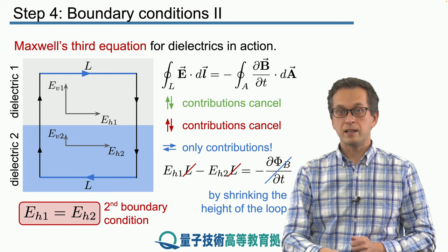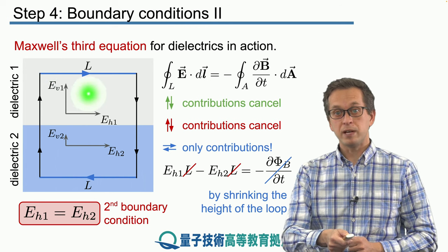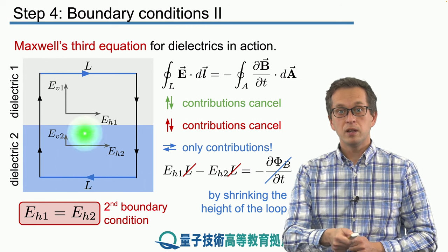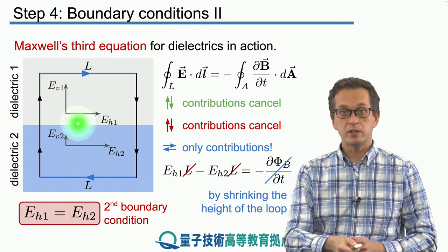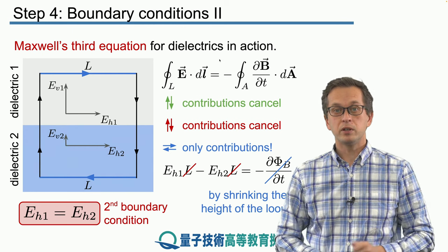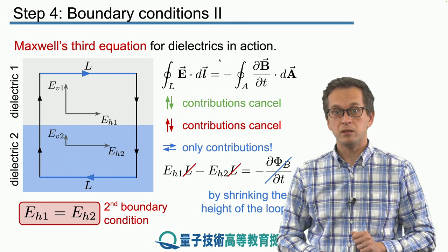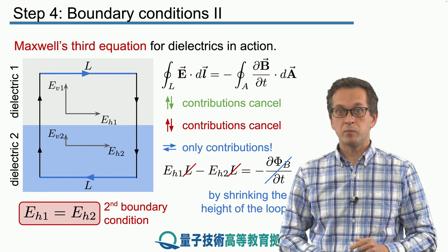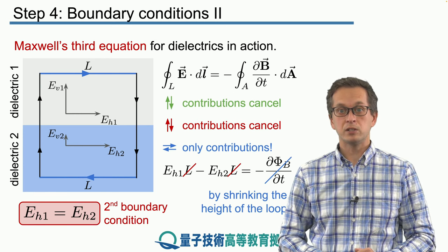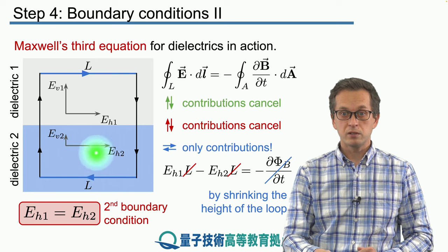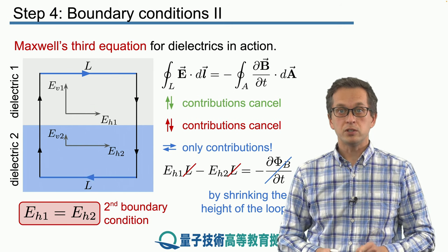We saw previously that as light radiation goes from dielectric 1 into dielectric 2, the vertical components change depending on the coefficients Ke1 and Ke2. On the other hand, we have just derived from Maxwell's third equation that the horizontal components of the field do not change. They remain the same.